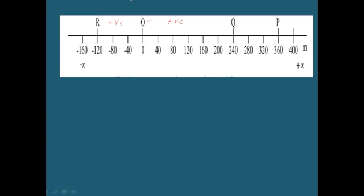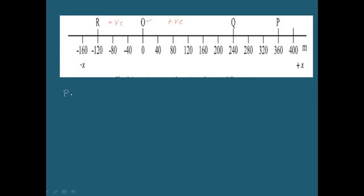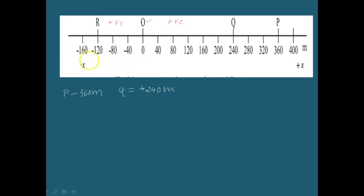The position coordinates of points P and Q: considering point P, its position coordinate is plus 360 meters. For point Q, it is plus 240 meters. The position coordinate of R is minus 120 meters. All these are measured with respect to point O. Now let's understand what path length is — I'll explain this with an example.